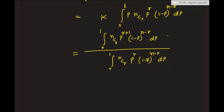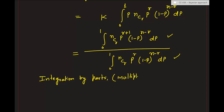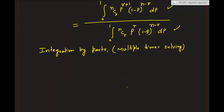To evaluate this integral, we need integration by parts, applied multiple times. Without going through all the steps, after repeated integration by parts the result is that the expected value of the posterior distribution equals (r+1)/(n+2). You should try to derive this on your own by applying integration by parts successively.